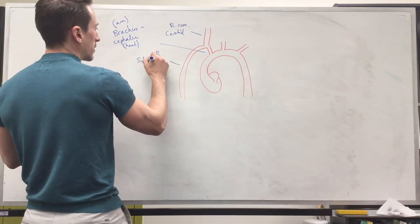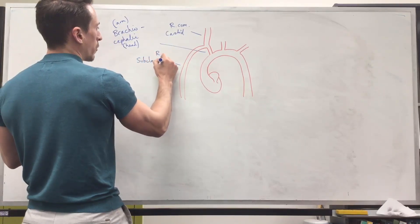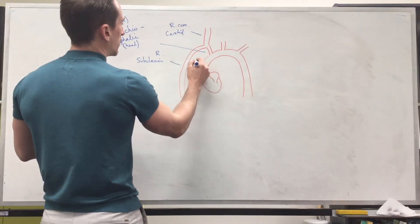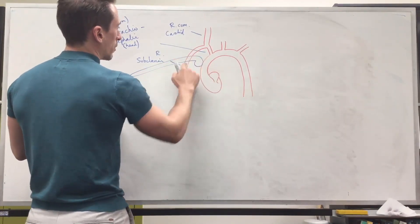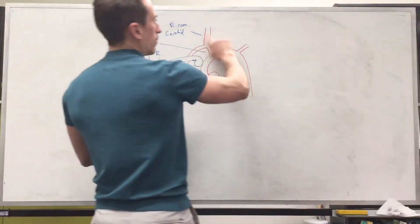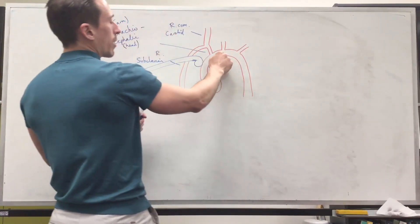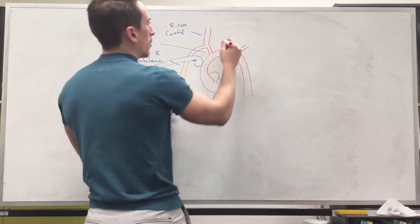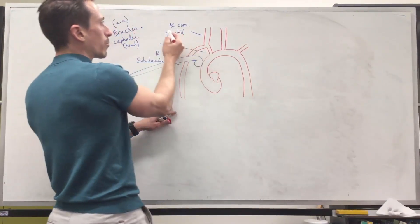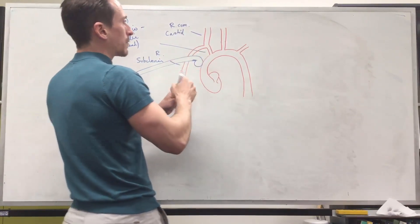Now it's called the subclavian, sub meaning below, clavian is referring to the clavicle because what we've got here is the clavicle and it goes behind the clavicle. Now moving a little bit to the left we've got a branch of the aorta here and this is going to be the left common carotid. So we've got the right common carotid there, we've got the left common carotid here.